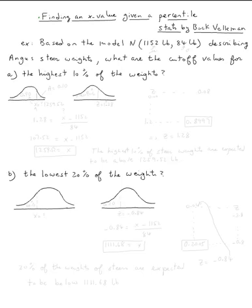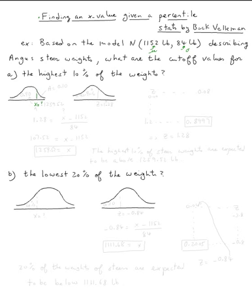So with a mean of 1152 pounds and a standard deviation of 84 pounds describing Angus steer weight, what are the cutoff values for the highest ten percent? The highest ten percent — so assume this is the x we're looking for, and this area is ten percent, which means 0.10 on the table.